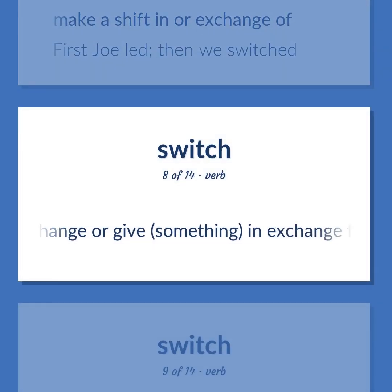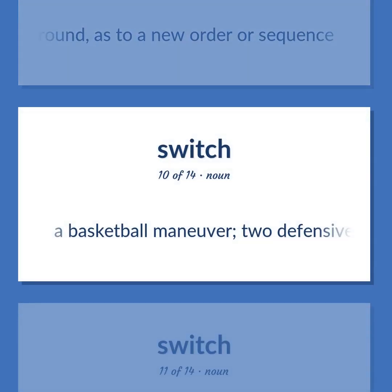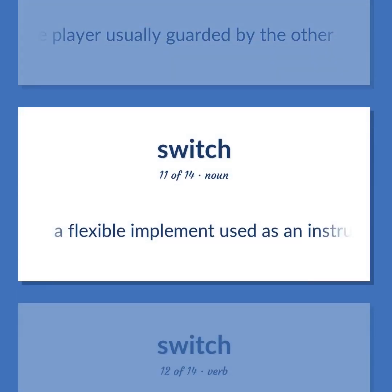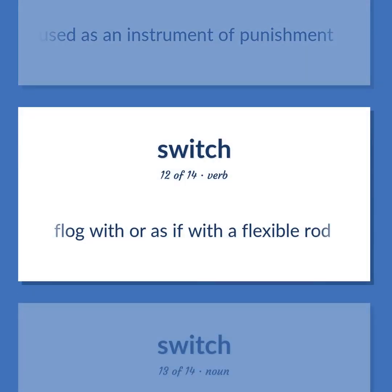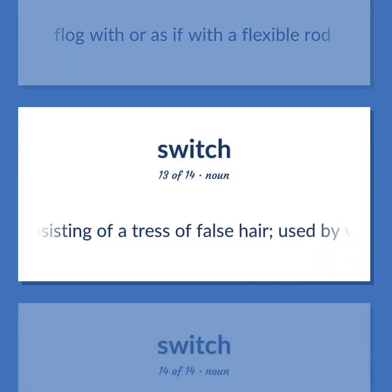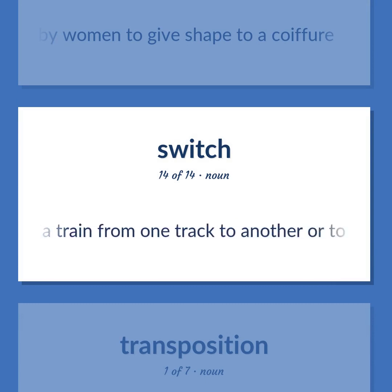Switch (continued): Exchange or give something in exchange for. Change over, change around, as to a new order or sequence. A basketball maneuver: two defensive players shift assignments so that each guards the player usually guarded by the other. A flexible implement used as an instrument of punishment. Flog with or as if with a flexible rod. Hairpiece consisting of a tress of false hair used by women to give shape to a coiffure. Railroad track having two movable rails and necessary connections used to turn a train from one track to another or to store rolling stock.